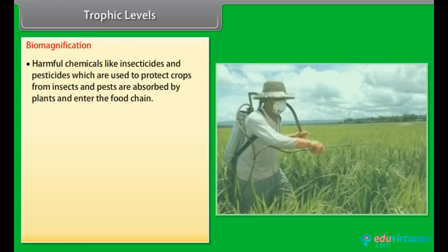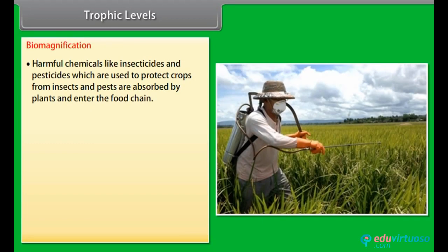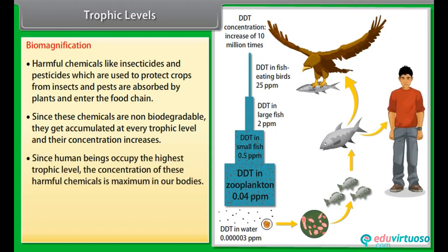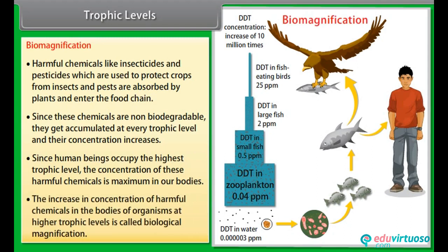Harmful chemicals like insecticides and pesticides, which are used to protect crops from insects and pests, are absorbed by plants and enter the food chain. Since these chemicals are non-biodegradable, they get accumulated at every trophic level and their concentration increases. Since human beings occupy the highest trophic level, the concentration of these harmful chemicals is maximum in our bodies. This increase in concentration of harmful chemicals at higher trophic levels is called biological magnification.